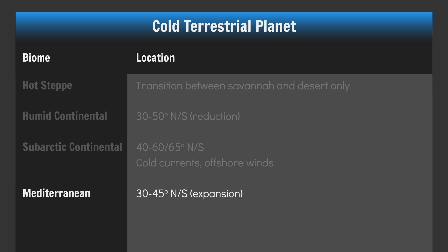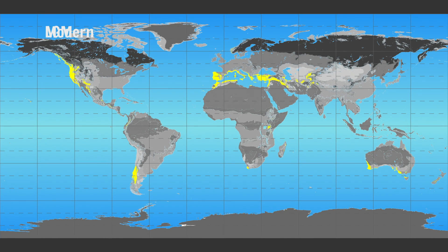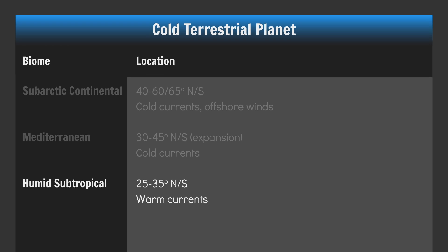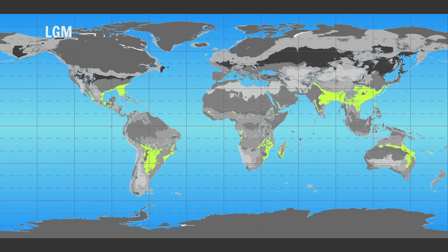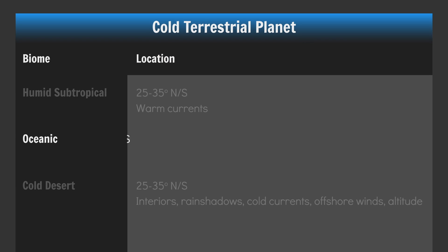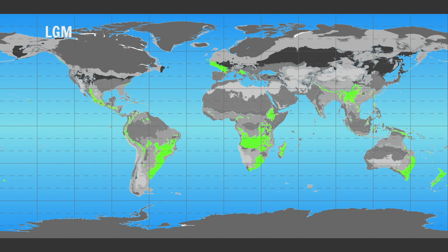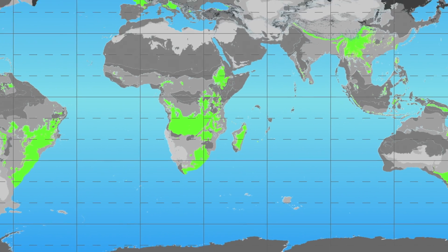Place your Mediterranean climates between 30 and 45 degrees north and south in areas affected by cold currents — just like before, but with an expansion of overall coverage. Place your humid subtropical climates between 25 and 35 degrees north and south in areas affected by warm currents. Place your oceanic climates between 40 and 55 degrees north and south in regions affected by warm currents, and also at altitude in humid subtropical regions.